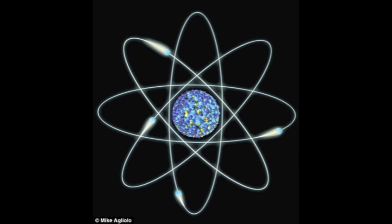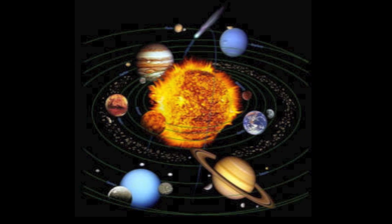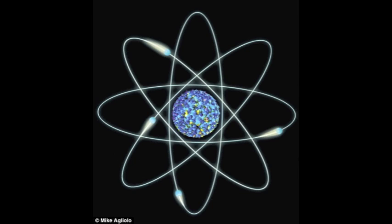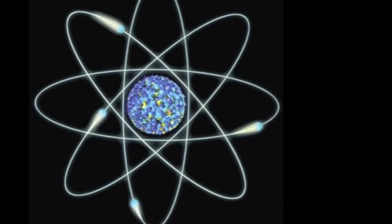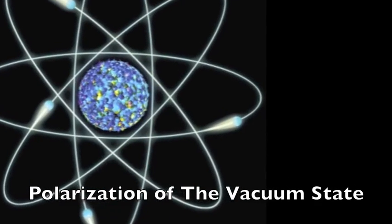Classical electron theory views an atom as though it were a solar system. However, an atom lives in a different realm than a solar system. It is on a different level of creation, trillions of billions times smaller. If we view an atom as a solar system, we will not see the whole picture. Modern electron theory views an atom from a different perspective. In particular, the model sees an electron as a polarization of the vacuum state.